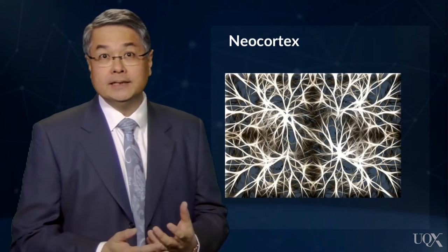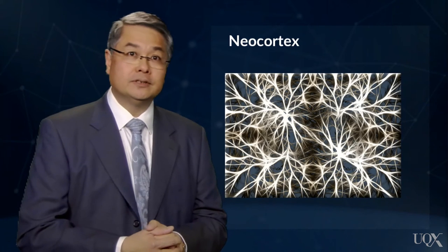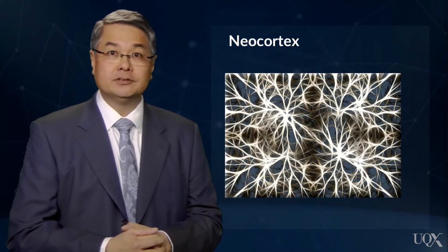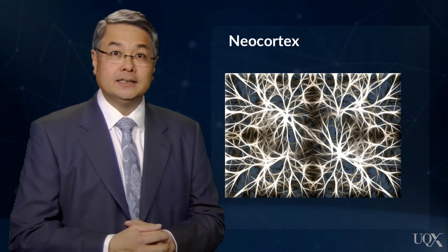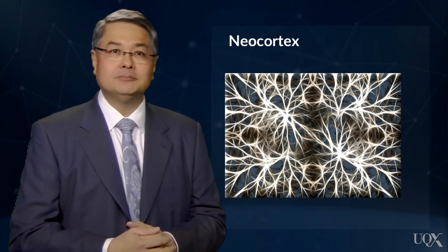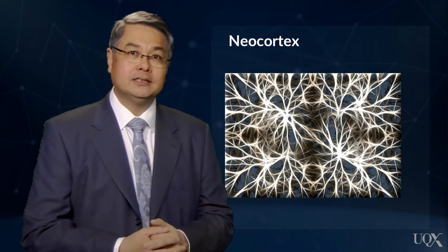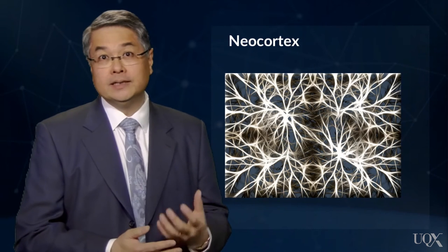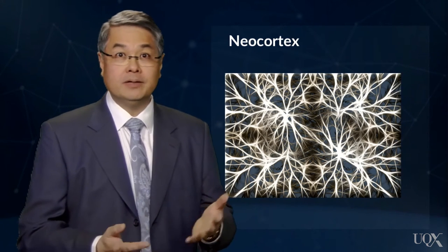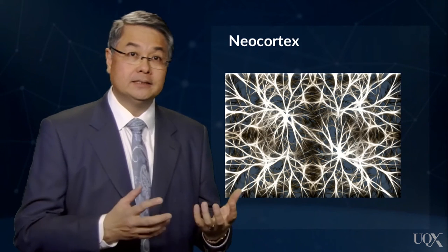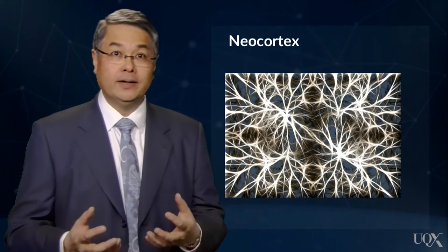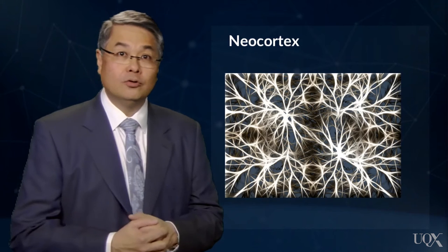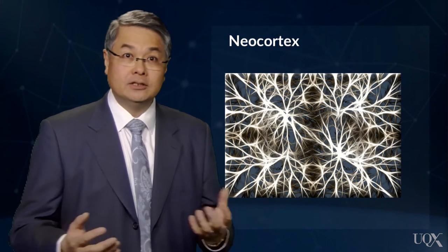The neocortex is a sheet of neural tissue that covers the cerebrum and contains about 90% of the brain's neurons. The neocortex is critical to memory, attention, perceptual awareness, thought, language, and consciousness.